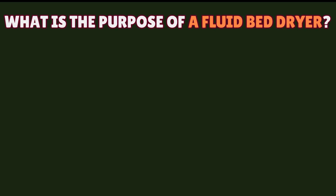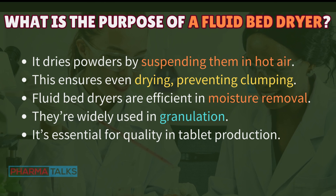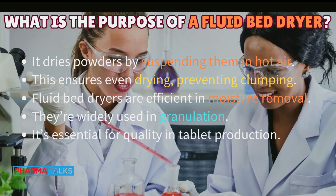What is the purpose of a fluid bed dryer? It dries powders by suspending them in hot air. This ensures even drying, preventing clumping. Fluid bed dryers are efficient in moisture removal. They're widely used in granulation. It's essential for quality in tablet production.